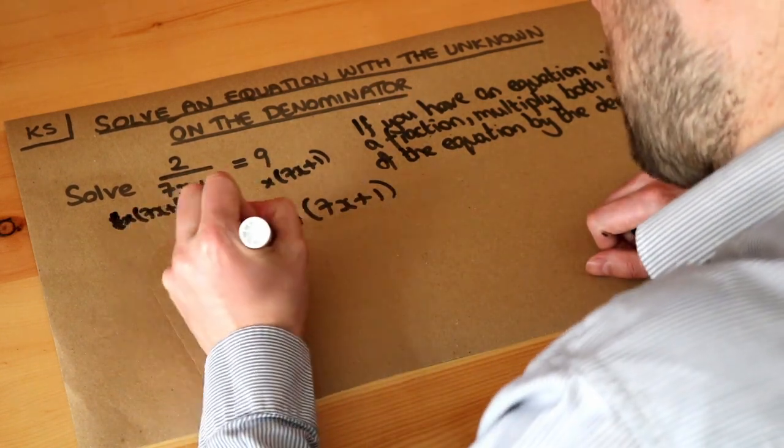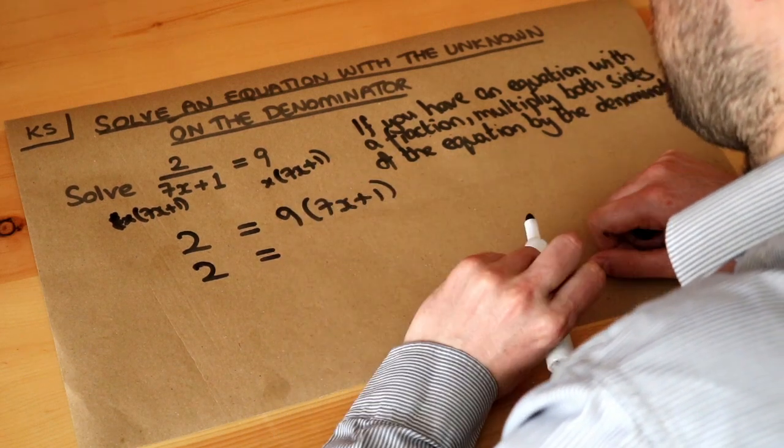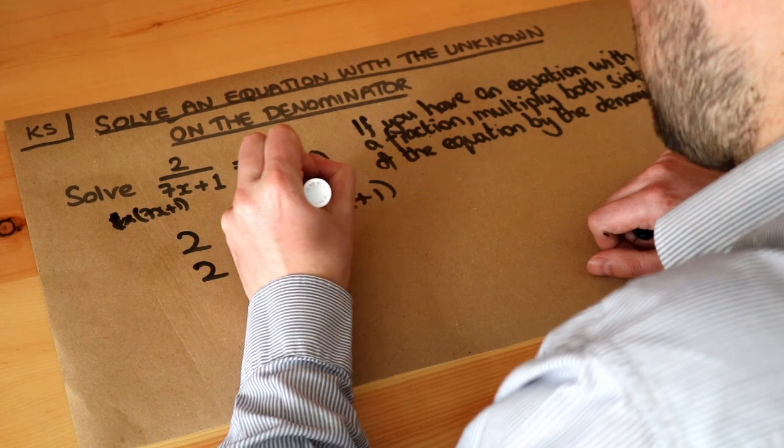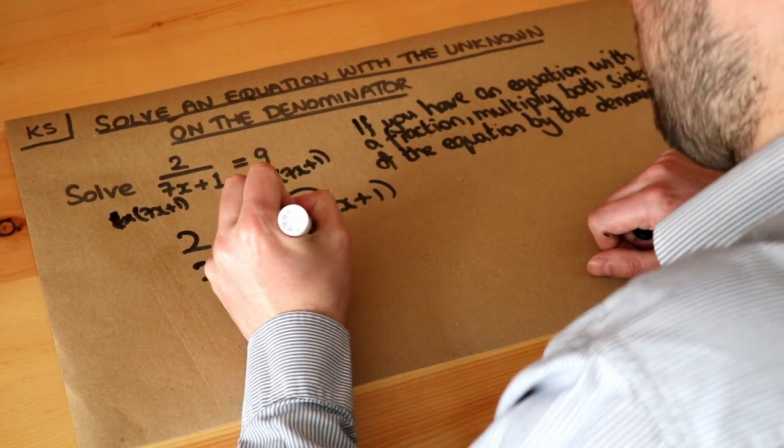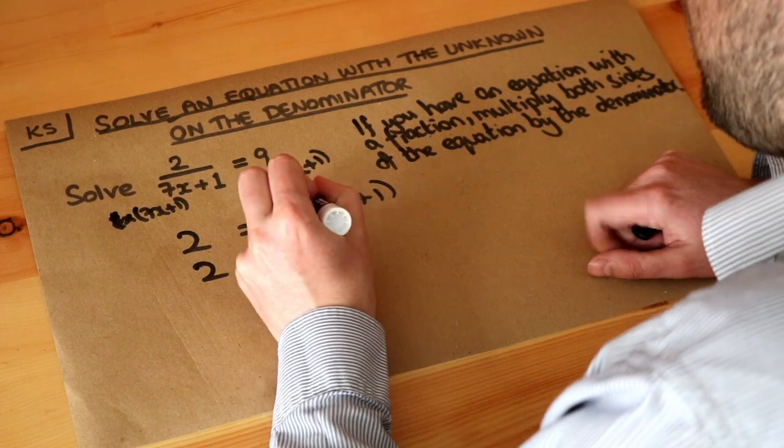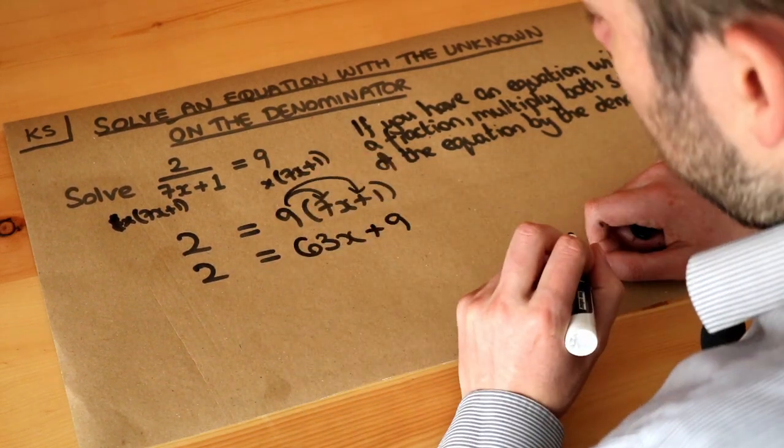So let's expand out the right hand side. We do the thing in front of the bracket times each of the things inside the bracket, so we do the 9 times the 7x. 9 times 7 is 63, so it's 63x. And you do the 9 times the 1, which is plus 9. Looking good so far?